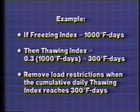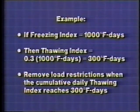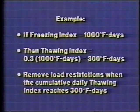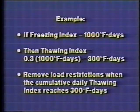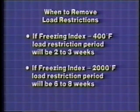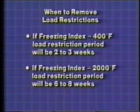For example, if the preceding winter's freezing index is 1,000 degree Fahrenheit days, then the associated thawing index is about 300 degree Fahrenheit days. To use this to calculate when to remove load restrictions, add each day's thawing index cumulatively beginning with the start of the thawing period. When the cumulative daily thawing index equals the predicted thawing index, you may consider removing the load restrictions. If the freezing index is about 400 degree Fahrenheit days, expect to enforce restrictions for about two to three weeks. For a much colder winter with a freezing index of 2,000 degree Fahrenheit days, you may need to enforce restrictions for about six to eight weeks.